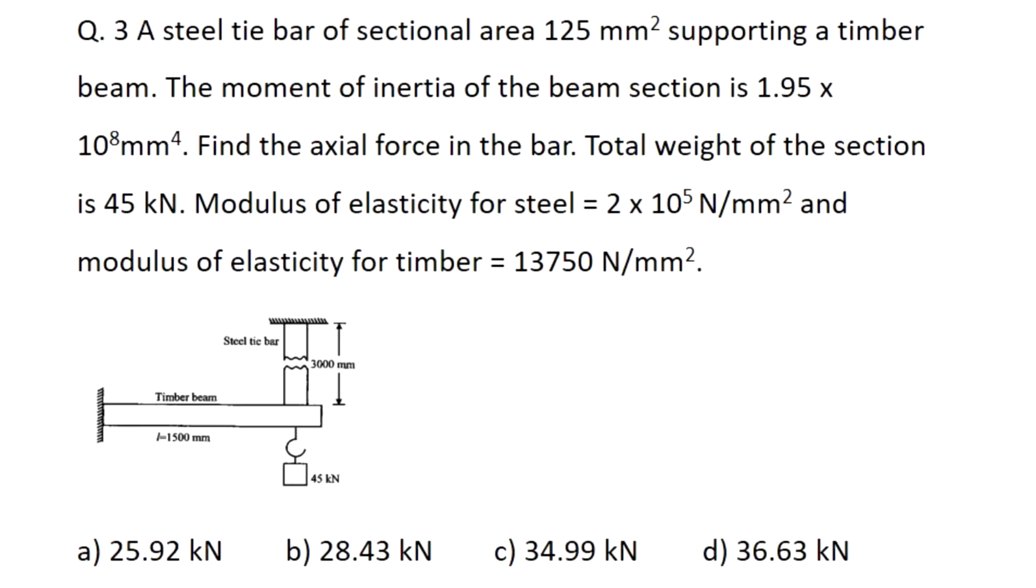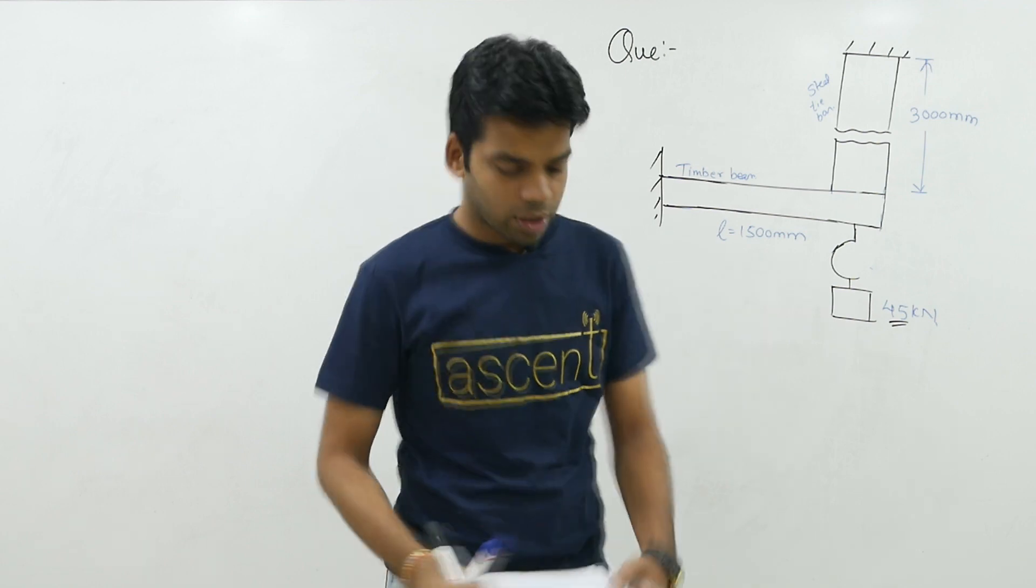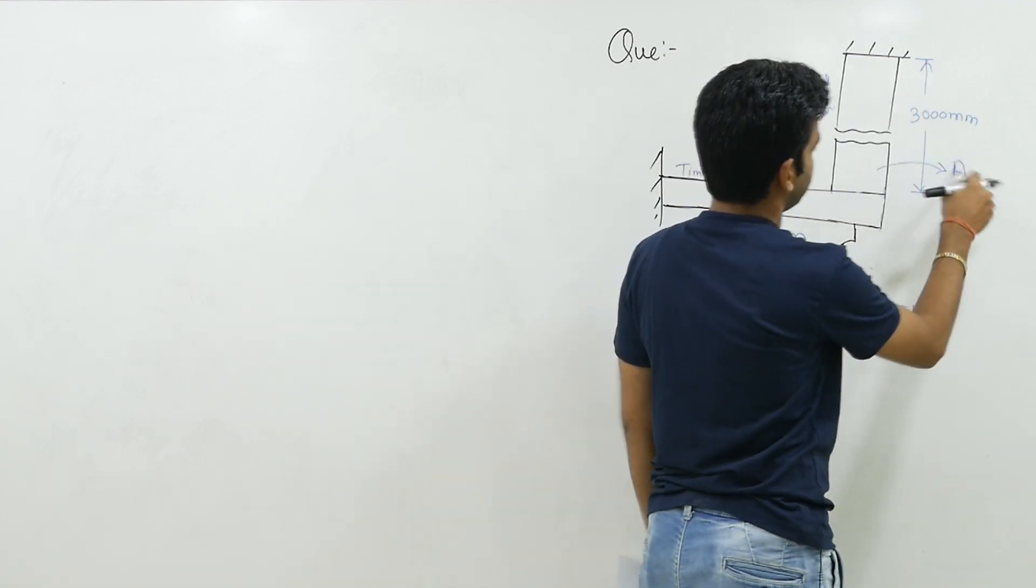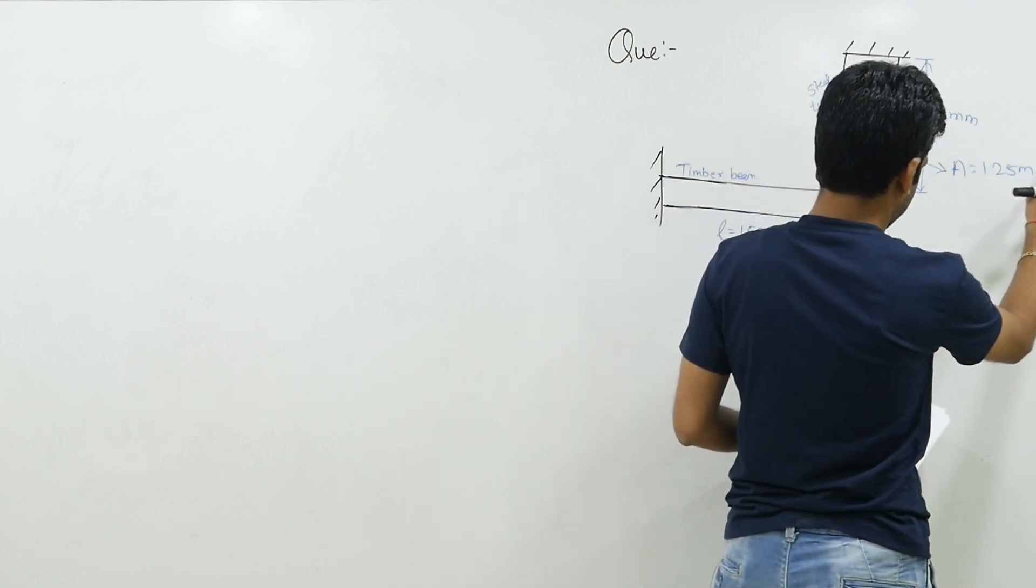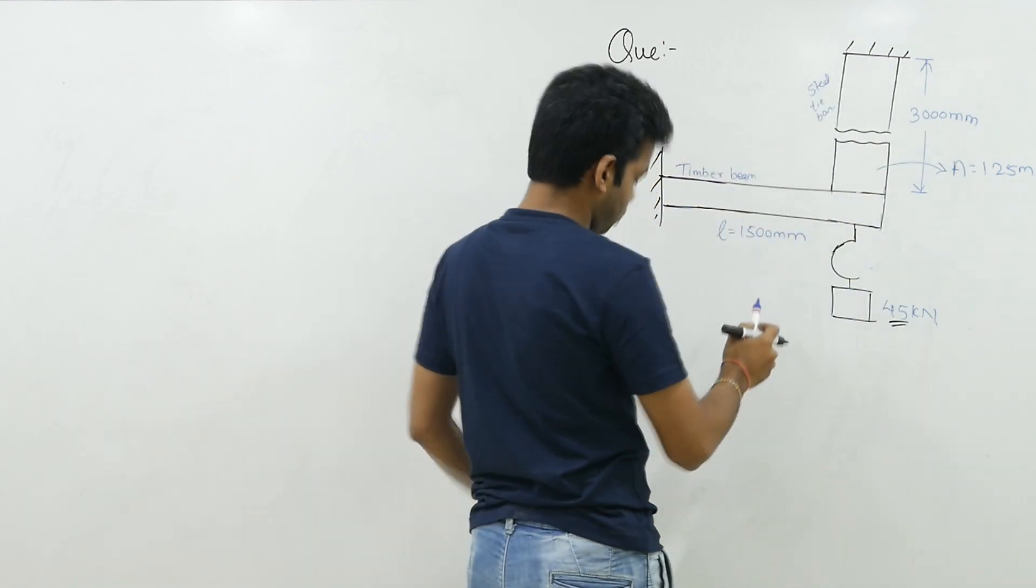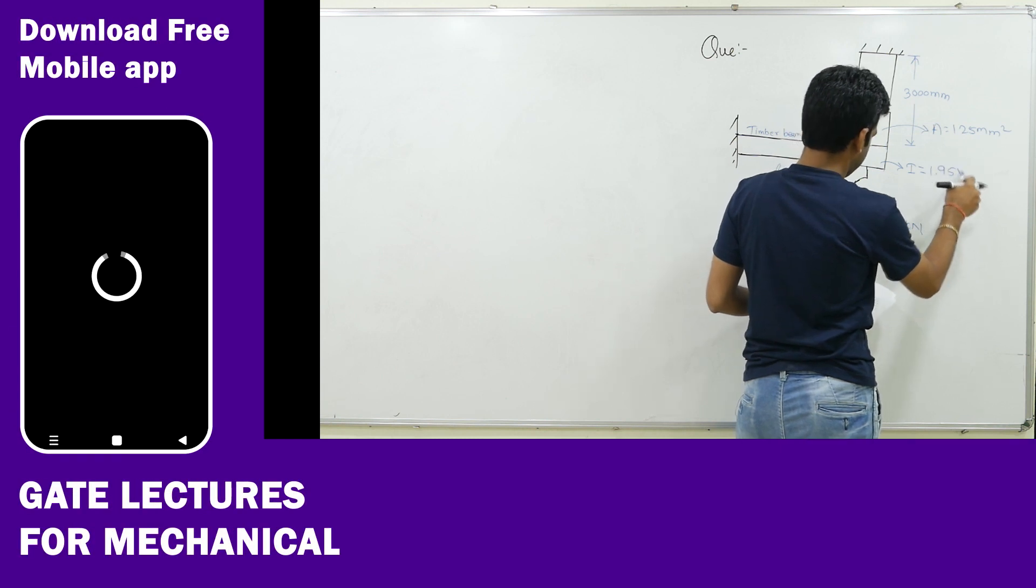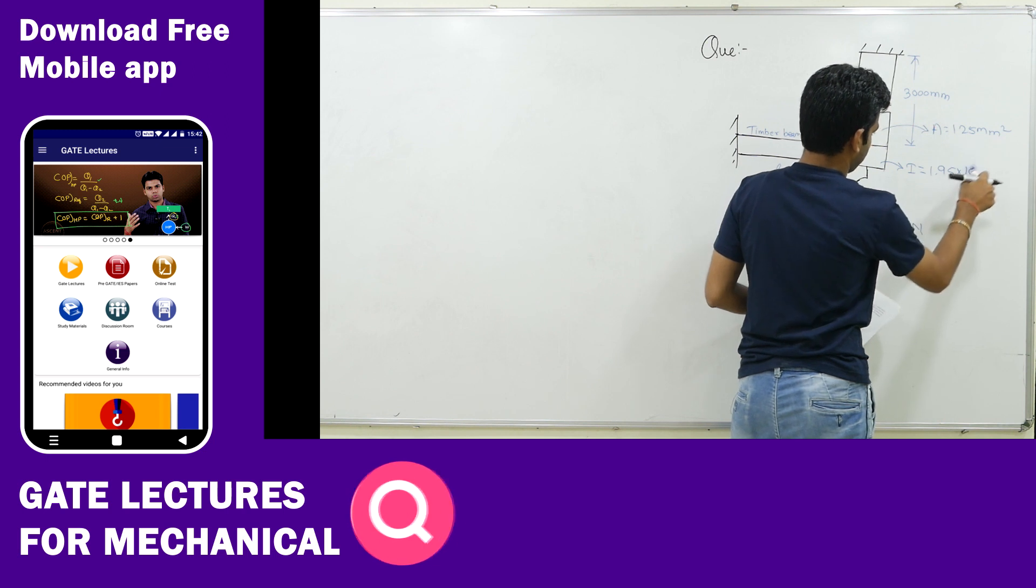So the very first question: A steel tie bar of sectional area 125 mm² supporting a timber beam. The moment of inertia of the beam section is 1.95 × 10⁸ mm⁴. Find the axial force in the bar. Total weight of the section is 45 kN. Modulus of elasticity for steel is 2 × 10⁵ N/mm² and moment of inertia 1.95 into 10⁻⁸ mm⁴.